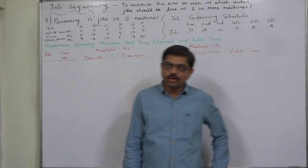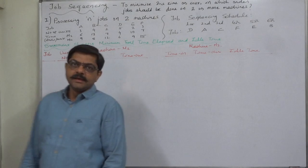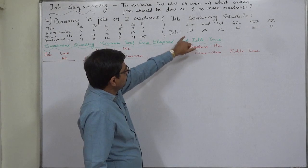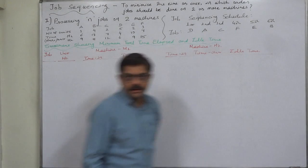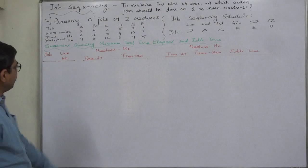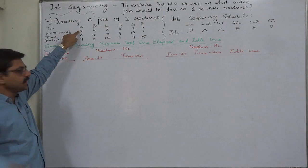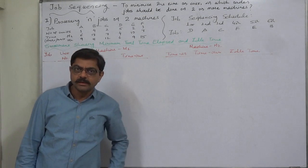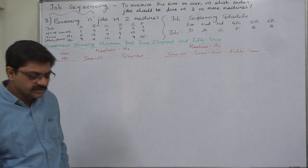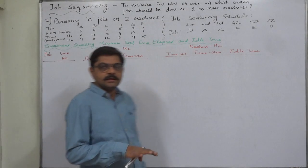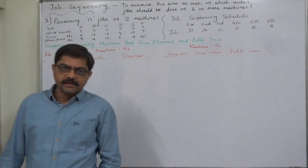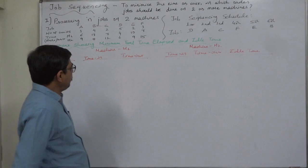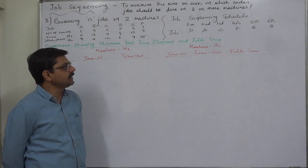Hello and welcome to Part 2 of the solution. In the first part, we already prepared the job sequencing schedule showing the preference order D, A, C, F, E, B. The special point in this case is that information regarding the number of units to be manufactured in each job is also available. Normally in this chapter, job sequencing, no information about the number of units is given, but in this case it is a special point. Now we are going to prepare the statement showing minimum total time and idle time.